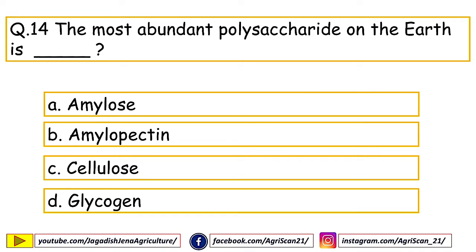Next question: the most abundant polysaccharide on earth is — options are amylose, amylopectin, cellulose, glycogen. The right answer is cellulose.